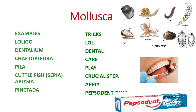The trick is: 'Loll Dental Care, play crucial step, apply Pepsodent only' — like an advertisement. From 'Loll' it's Loligo, from 'Dental' it's Dentalium, from 'Care' it's Chiton, from 'Play' it's Pila, from 'Crucial Step' it's Cuttlefish, from 'Apply' it's Aplysia, and from 'Pepsodent' it's Pinctada. You will clearly be able to remember all the Mollusca examples.